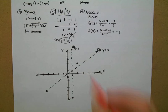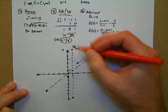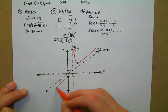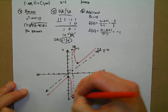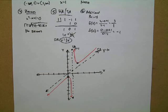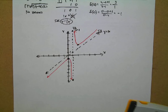Remember we are graphing functions, so the graph should pass the vertical line test — no curving back on itself. Use the slant asymptote to guide the shape of the curve. Checking the graphing calculator confirms our graph. We can also graph y = x simultaneously to show the slant asymptote. The graph matches nicely.